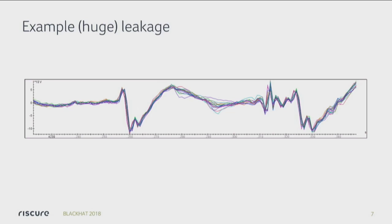If you take a number of these traces and then overlap them, you can start seeing where the traces start to diverge. And that can actually mean two things: it can be really huge data leakage, or it can be some noise. I'm saying really huge data leakage because here you can visually see that the traces are actually diverging. Normally, if you have a fairly well-protected device, the leakage is below the noise threshold, so you're not going to be able to see it with the naked eye. You need some kind of statistics and filtering to get to that point.